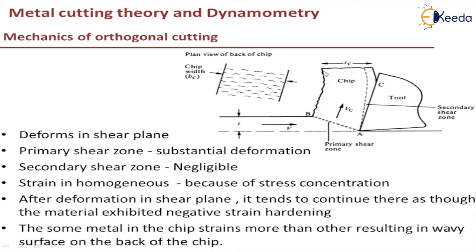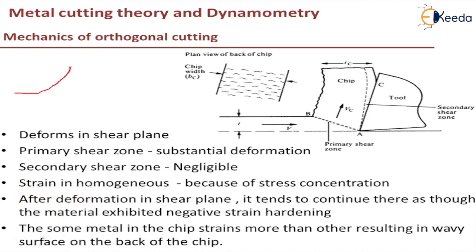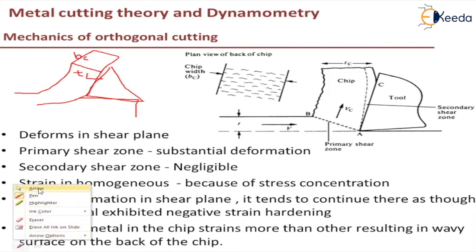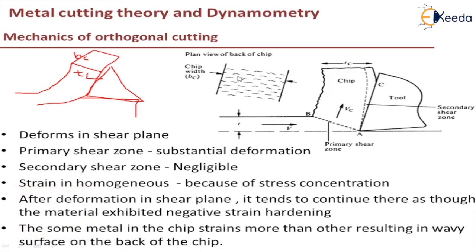Some metal in the chip strains more than other, resulting in a wavy surface on the back of the chip. As you can see, there is a wavy surface on the back of the chip. Considering the width of the chip — this is the chip thickness, this is the tool, and this is the width of the chip — the width is not continuous. As you can see in this figure, it is not continuous; there is a discontinuity in the wavy form along the width of the chip.